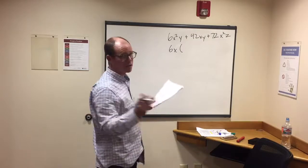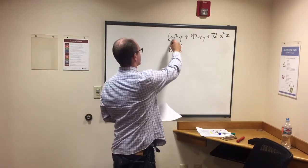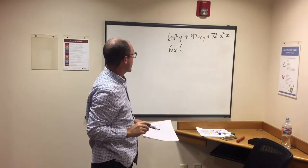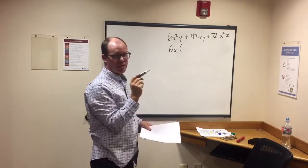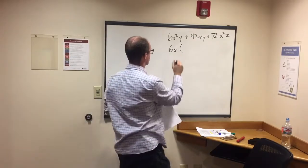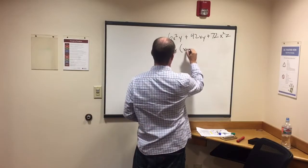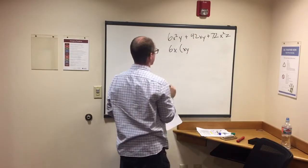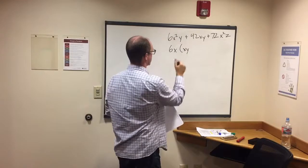First, I'm trying to multiply 6x times something to get 6x squared y. You need to know that x times x is x squared, and then we're going to throw a y on there - just xy - and that will give me 6x squared y.